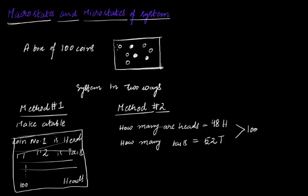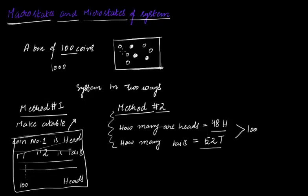So these are the two methods to describe the same system. Method one talks about the details of the arrangement of each and every coin, and it's telling us a great deal more information about the box. But the problem is that it's very huge — if you have a thousand coins, it becomes very difficult to mark all the coins and make this giant table. With method two, you only have to worry about two numbers. Even if the coins increase to a billion, you only have to tell me two numbers. So you're not getting the entire information, but you're getting something out of this.